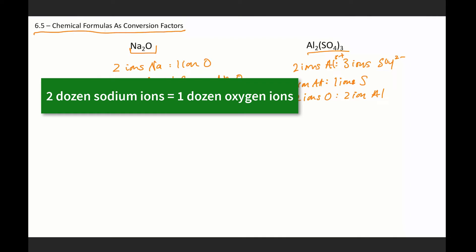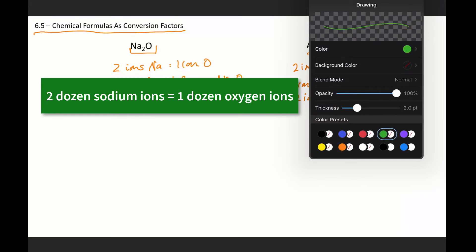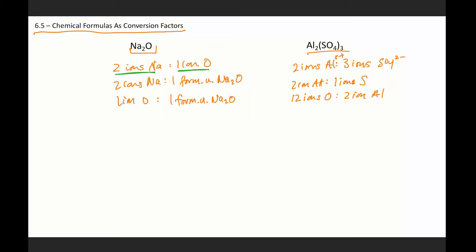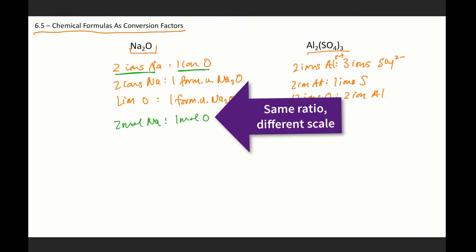For me to say, and let's be clear here, two ions of sodium to one ion of oxygen is the same ratio as saying two dozen ions of sodium for every one dozen ions of oxygen. Which is why to say two moles of Na for every one mole of O is the same relationship. It's just a different scale.